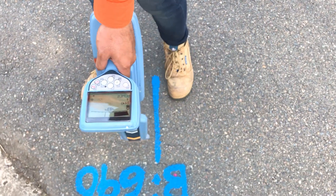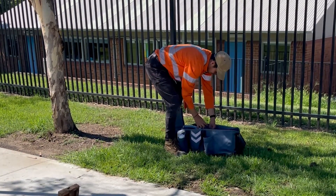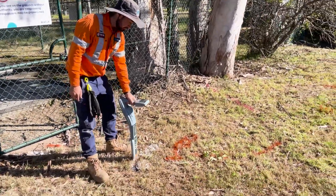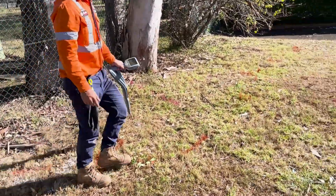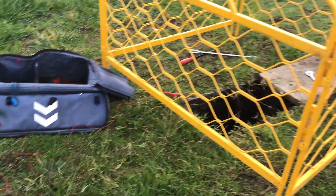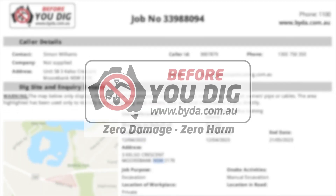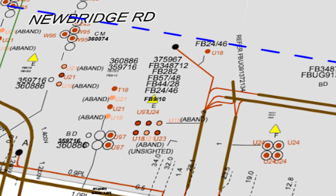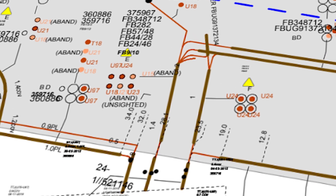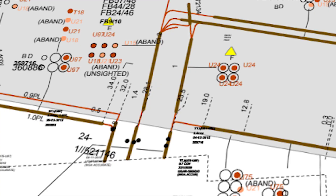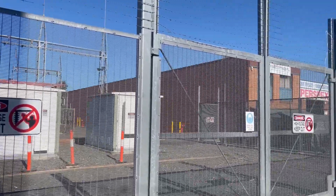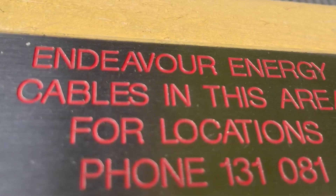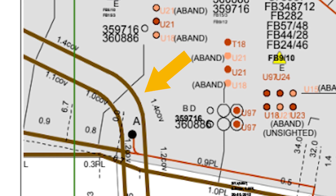Now that we know this, we can better understand how to deploy this method of locating out in the field. Passive won't typically be the first step you take on site, but on odd occasions it may be used to quickly identify what might be around so you can carry on with the active locating methods. The first thing you should do is submit a before-you-dig request to get back the main asset owner's utility drawings, including the electricity plans.